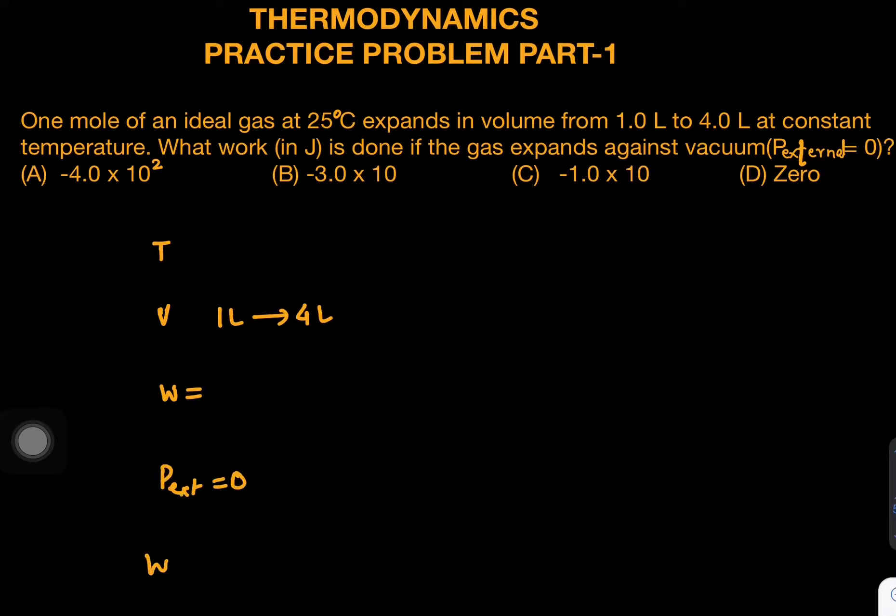Now, work done is equal to minus P external dv integral for any reversible process, and for irreversible process we write minus P external into delta v. What is delta v? Delta v is nothing but v final minus v initial.